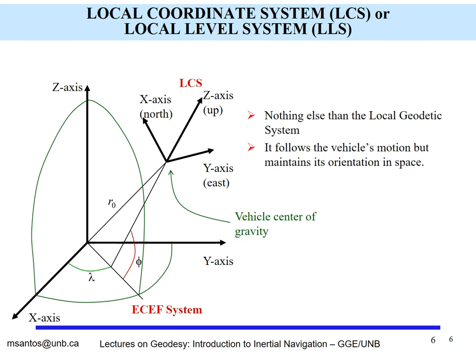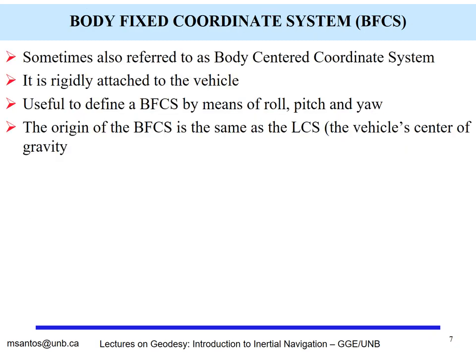The local coordinate system defines its origin as the center of gravity of the moving platform, with the x-axis pointing towards north, y-axis east, and z-axis pointing up. With that in mind, we can present a body-fixed coordinate system, which is rigidly attached to the vehicle. Its origin coincides with the local coordinate system at the vehicle's center of mass. The movements we call roll, pitch, and yaw define the variation of the body-fixed coordinate system with respect to the local coordinate system.